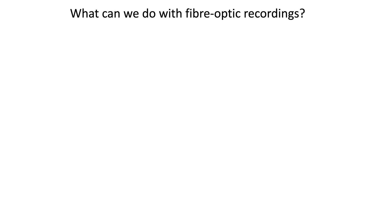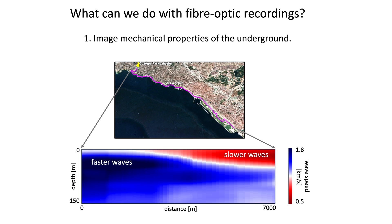Now the question remains: what can we do with the fiber optic recordings? By leveraging the advantages of the system, we can extract a detailed image of the mechanical properties of the subsurface. In this pilot project specifically, we were able to utilize the recorded ambient wave field to obtain an image of wave speed 150 meters below the fiber. The blue color in the section indicates faster waves, while the slower waves are depicted in red. We are currently working on further progress to enhance the resolution of this image.